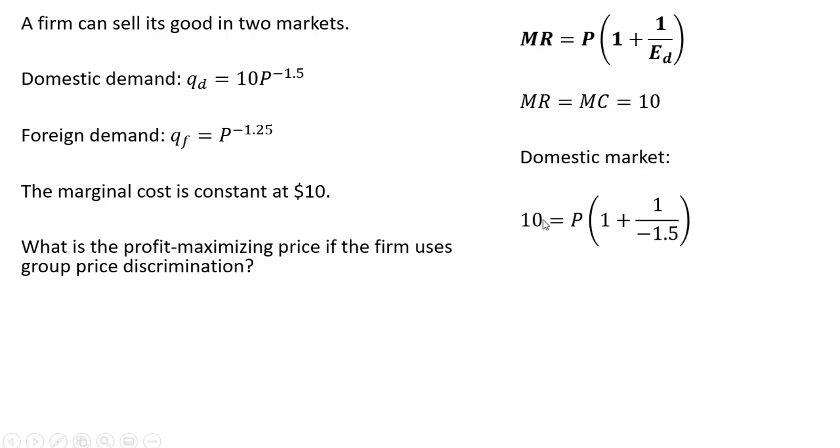Doing this in the domestic market first, we're setting the left-hand side equal to 10. Marginal revenue equals marginal cost, or $10. We're replacing the elasticity of demand here with minus 1.5, and now we're going to solve for the price. So 1 divided by minus 1.5 is minus 2/3. In parentheses, 1 minus 2/3 is 1/3. If we multiply both sides through by 3, the profit-maximizing price in the domestic market is $30.